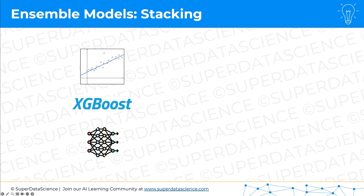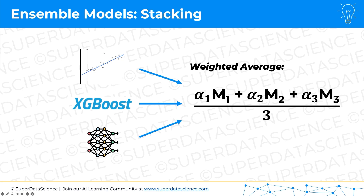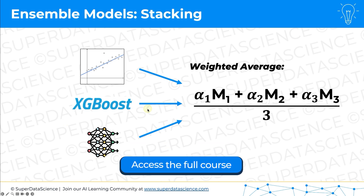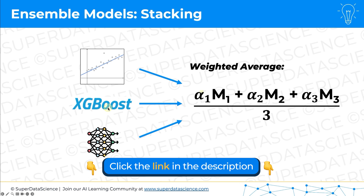This is where ensembling comes into play. A simple way to do that would be to take a simple average of the predictions of each one of these models. A more involved way would be to take a weighted average, where we have weights alpha 1, alpha 2, and alpha 3. It's up to you as the machine learning engineer to decide what these weights are — you'd need to see which model is better equipped for the problem at hand and make some judgment calls.